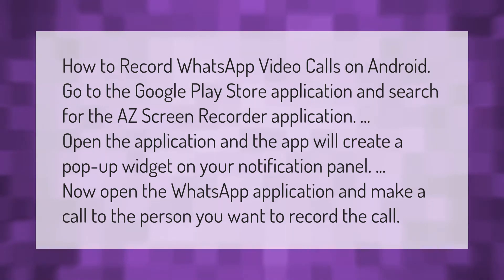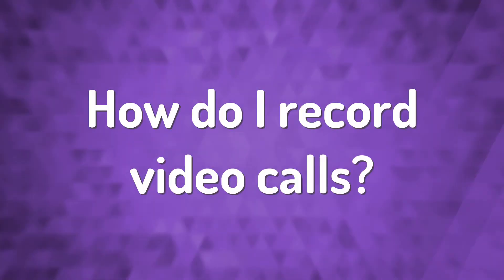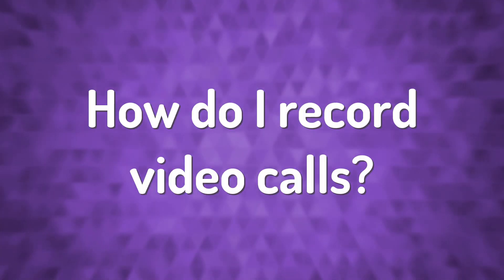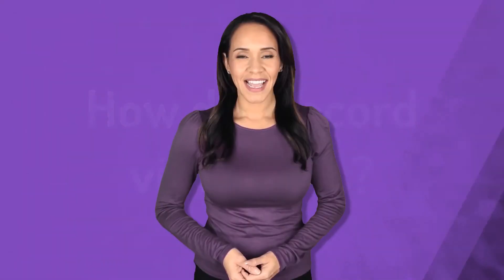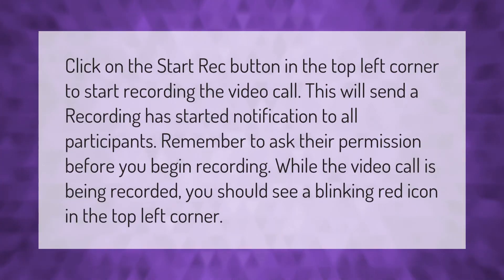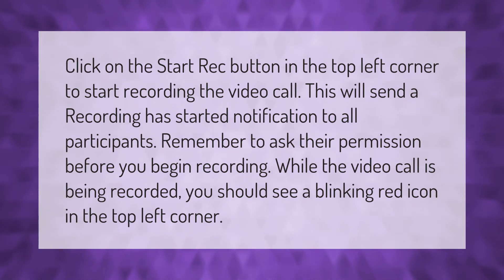Now open the WhatsApp application and make a call to the person you want to record. Click on the start rec button in the top left corner to start recording the video call. This will send a recording has started notification to all participants.